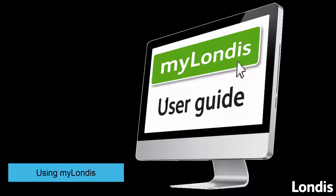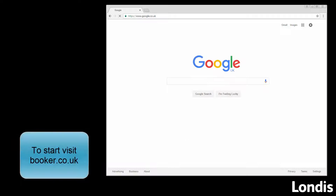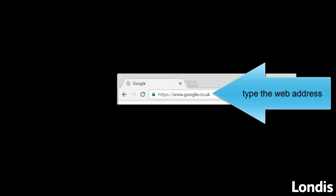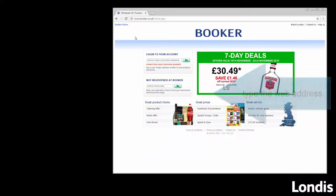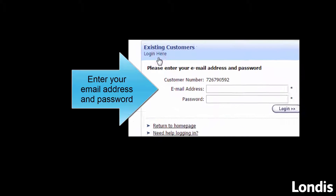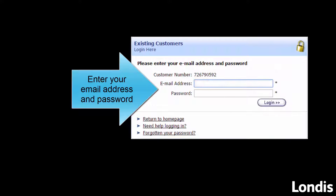Using MyLondis. To start, visit booker.co.uk — type the web address here. Enter your nine-digit account number, then enter your email address and password.